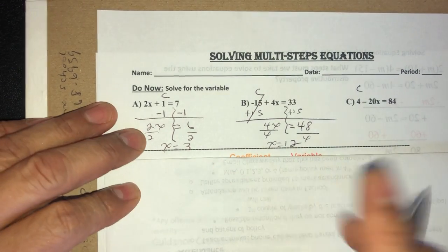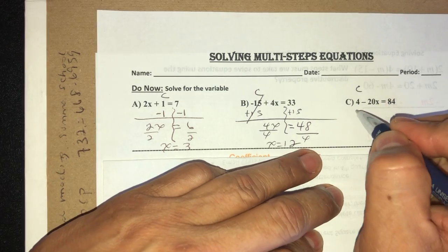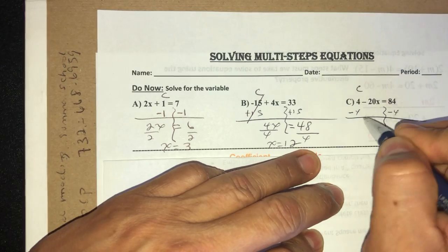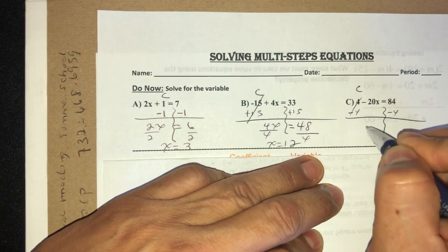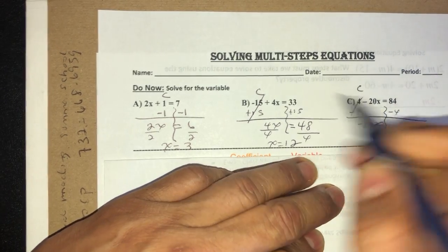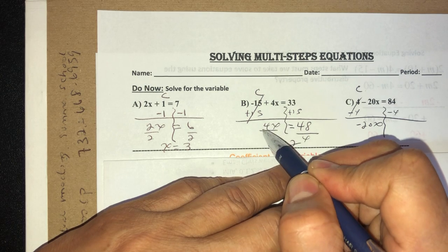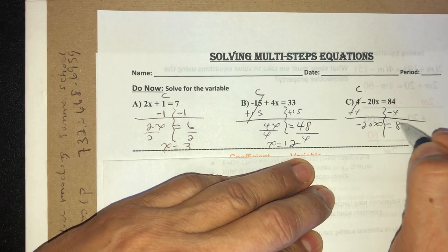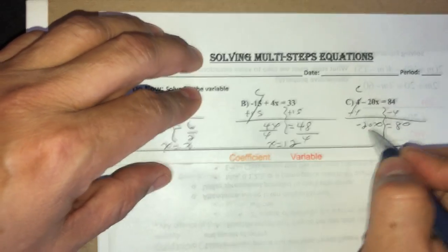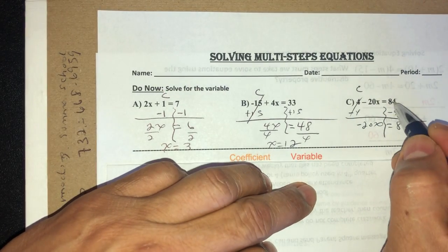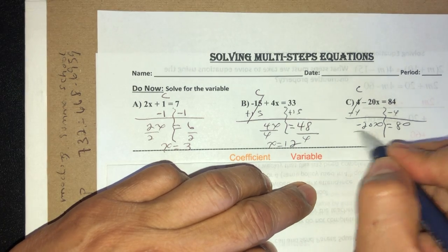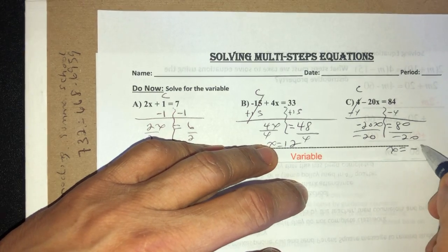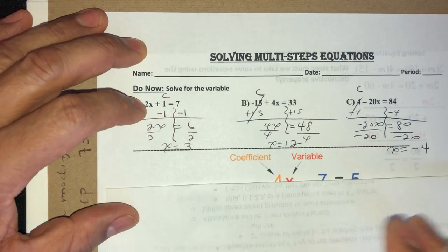Same thing here — minus 4 minus 4, that cancels out. Now remember, here because that was positive I didn't have to bring it down, but when it's negative you always bring that down because you might forget. So 84 minus 4 is 80, and if you divide by negative 20, x equals negative 4. That was the warm-up.